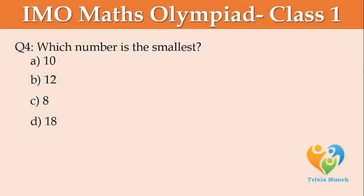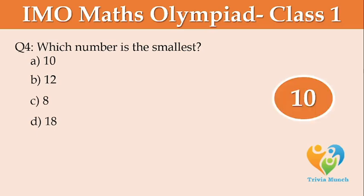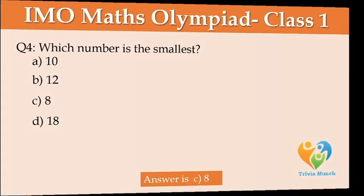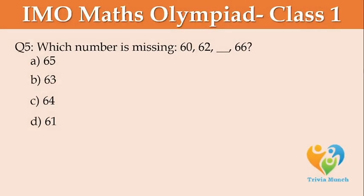Which number is the smallest? Option A: 10, Option B: 12, Option C: 8, Option D: 18. Which number is missing? 60, 62, ___, 66. Option A: 65, Option B: 63, Option C: 64, Option D: 61.